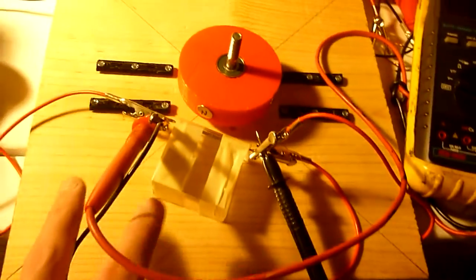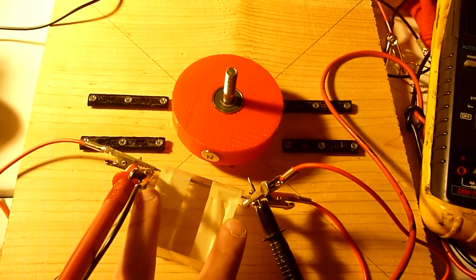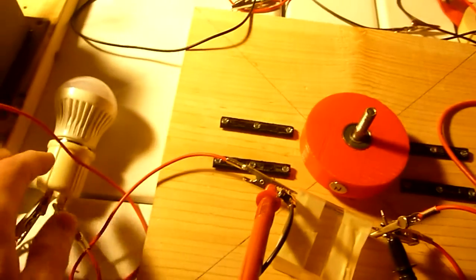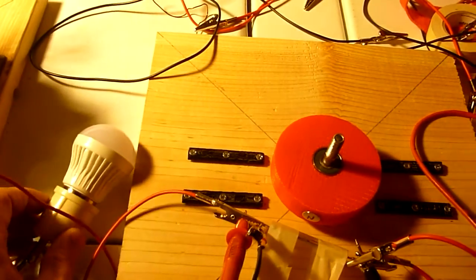So here we have a voltmeter and I'm going to show you some energy anomalies. I have the meter across the reed switch. And the load is this 5 watt light bulb.